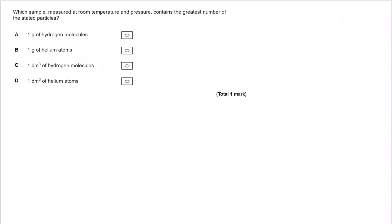So in this case we have got a sample at room temperature and pressure, so standard temperature and pressure, which contains the greatest number of stated particles. Now to answer this there are a couple of facts that you are going to need to remember.